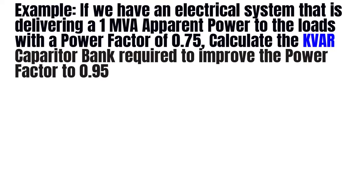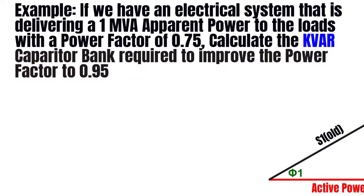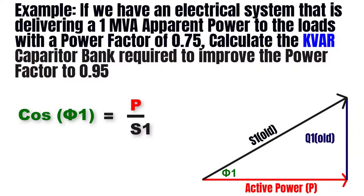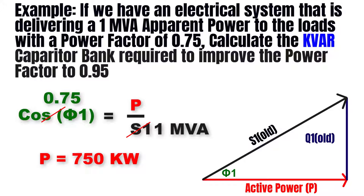Let's take an example. If we have a system delivering 1 mega volt ampere apparent power to the loads with a power factor of 0.75, calculate the kVAR capacitor bank required to improve the power factor to 0.95. For cosine phi 1 equal to 0.75, with S1 equal to 1 MVA, the active power equals 0.75 megawatt or 750 kilowatts.